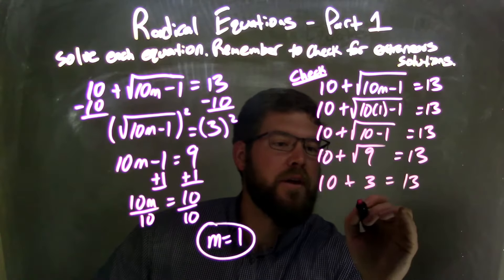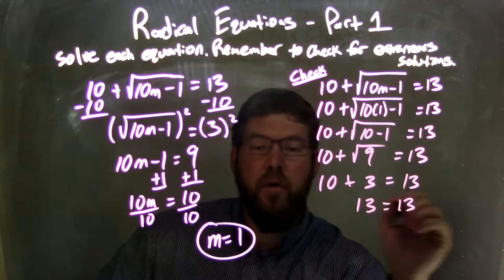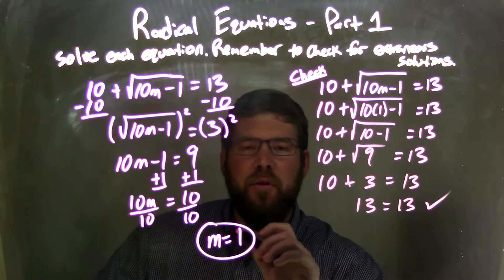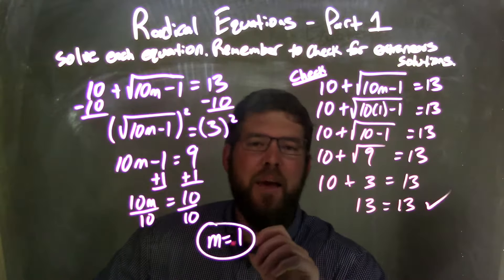And 10 plus 3 is 13. And they're equal, right? On both sides, 13 equals 13. Check. And so therefore, we can be confident that m equals 1 is our solution.